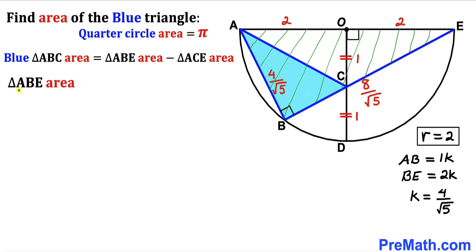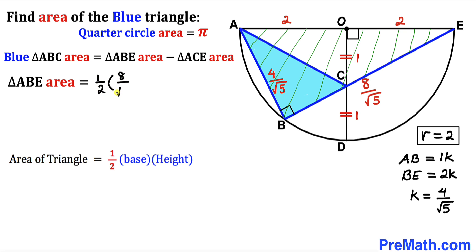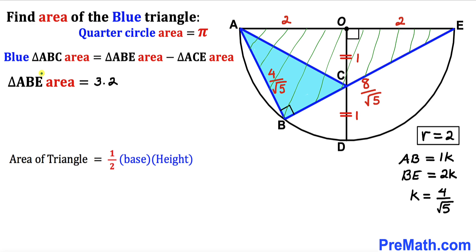Let's calculate the area of big right triangle ABE. Using the formula: area equals one half times base times height. Our base is BE equals 8 divided by √5 and our height is AB equals 4 divided by √5. So the area of triangle ABE is one half times 8/√5 times 4/√5, which simplifies to 16 divided by 5, or 3.2 square units.